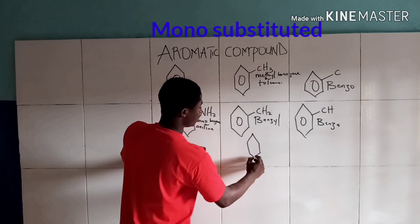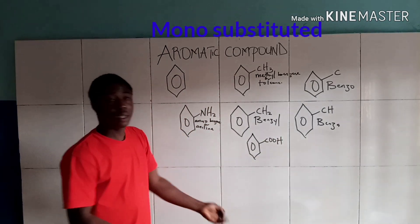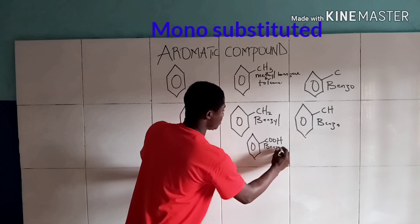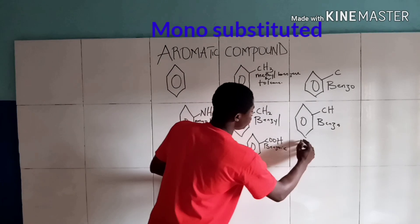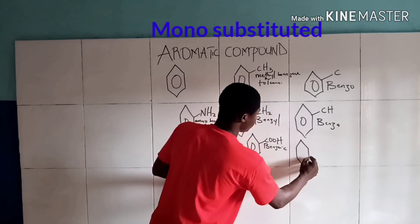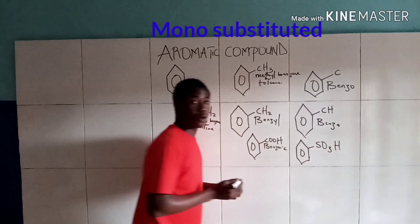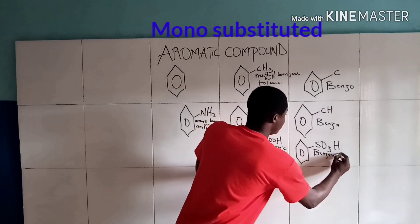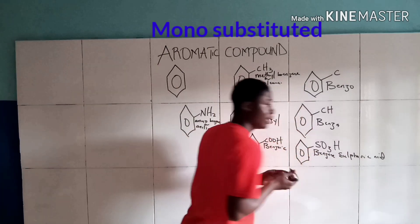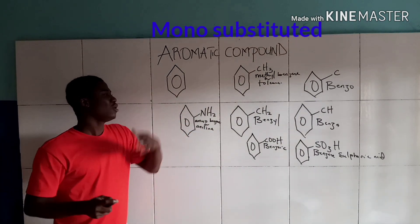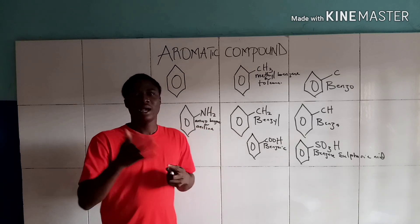Another monosubstituted benzene derivative is benzene attached to COOH, which is called benzoic acid. So all of these — toluene, aniline, benzoic acid — are examples of monosubstituted benzene derivatives.